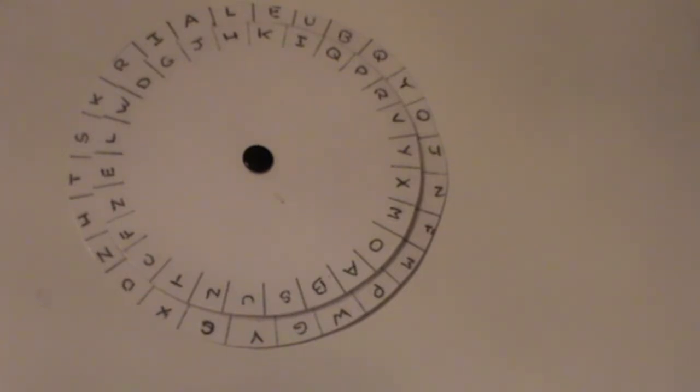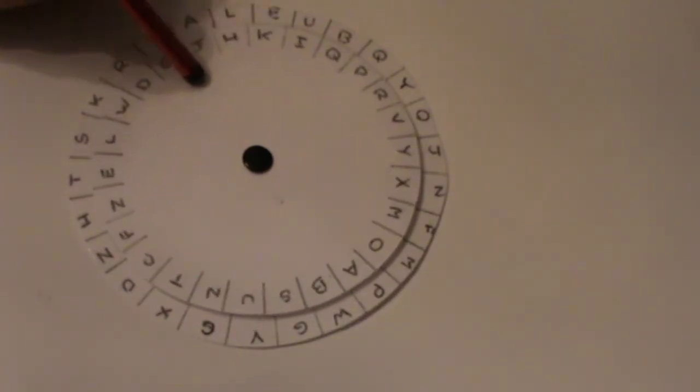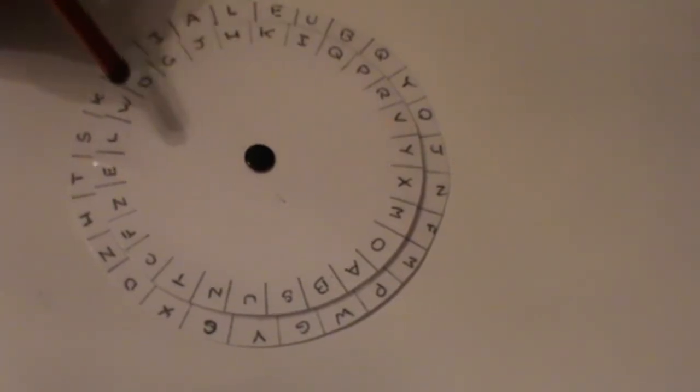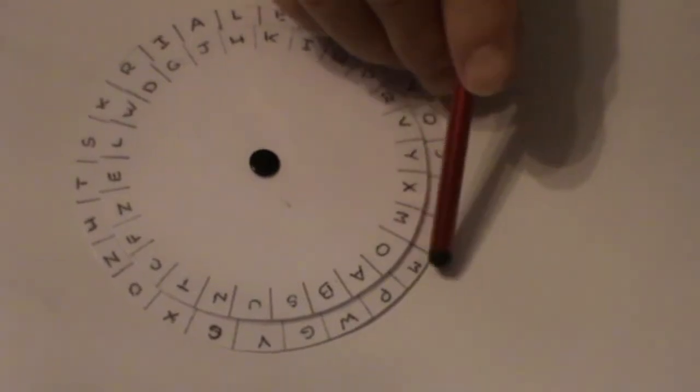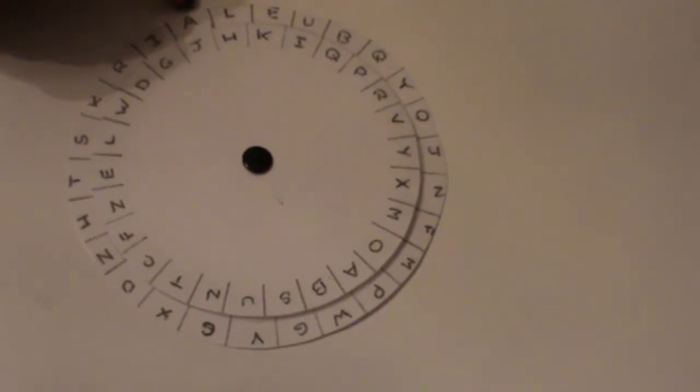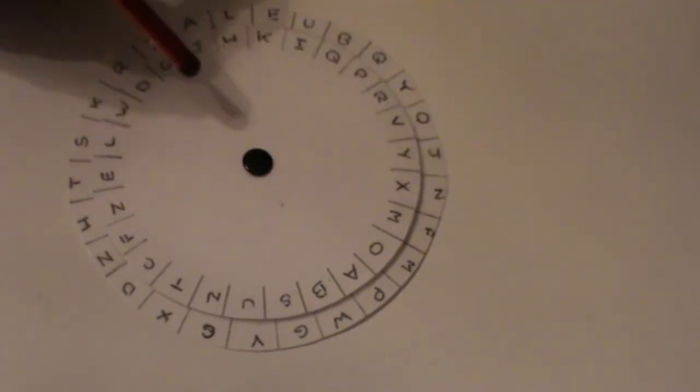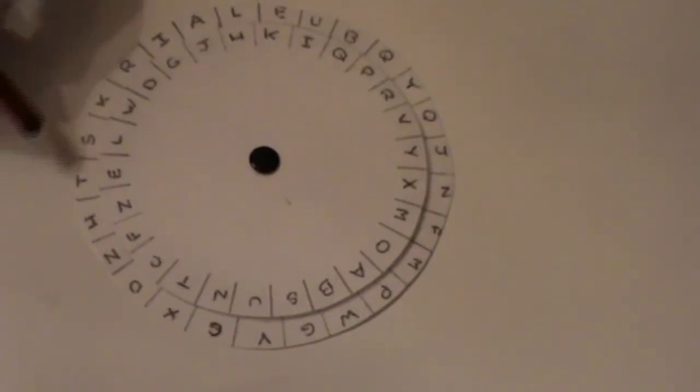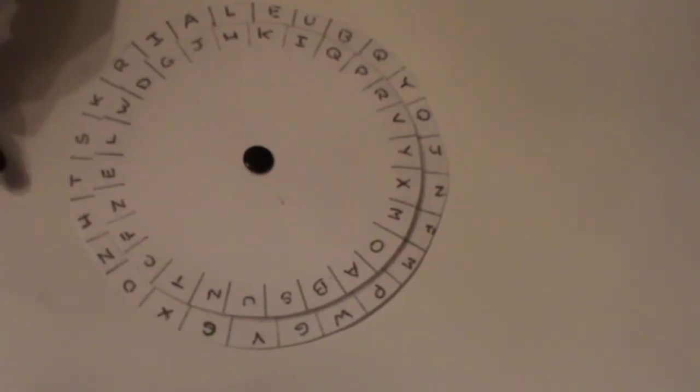When we receive the message the first thing we need to do is align E with K like so. Then going around the message now we'll read from the inner ring outwards. So O becomes M, J becomes A, W becomes K, G becomes I, X becomes N, and S becomes G which is making. And the message is decoded as making code disk.